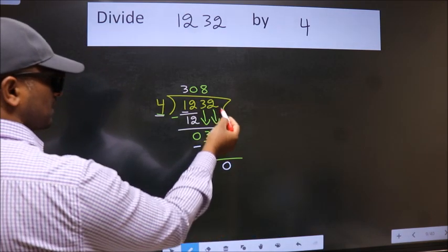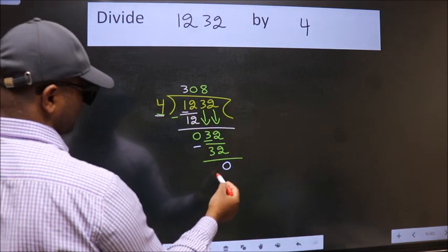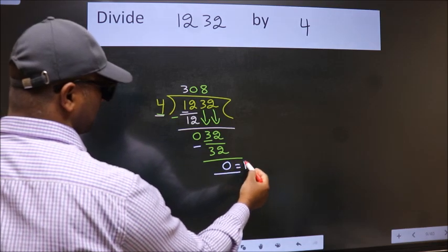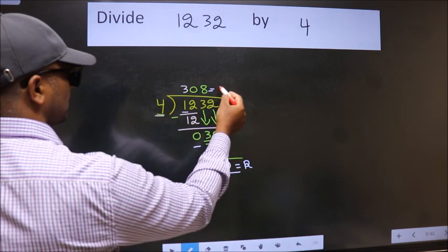No more numbers to bring it down, so we stop here. This is our remainder and this is our quotient.